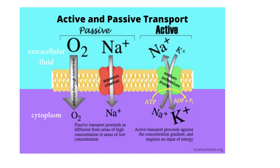In summary, active transport proceeds against the concentration gradient and requires an input of energy, while passive transport proceeds by diffusion from areas of high concentration to areas of low concentration and does not require energy. In active transport, proteins serve as transporter molecules and bind to the molecules being transported. Energy is required for this process to occur — specifically, ATP must be hydrolyzed to drive the process to completion.